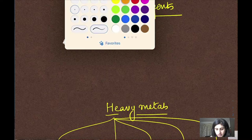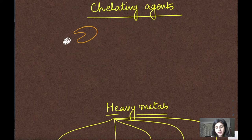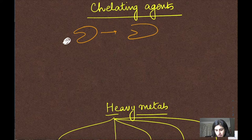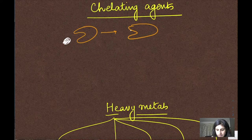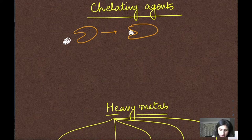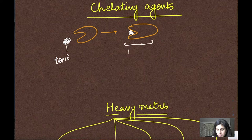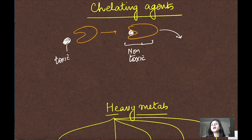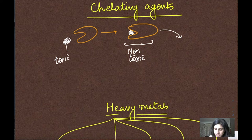When you give a chelating agent, it forms a complex with the metal ion. Though the metal itself is toxic, this complex becomes non-toxic. Apart from becoming non-toxic, it becomes excretable by the kidneys, so it becomes water soluble.